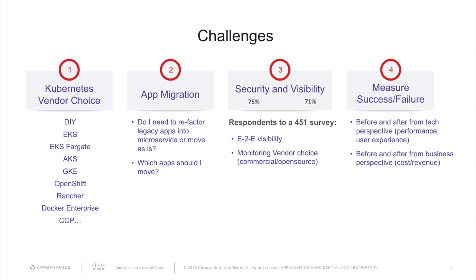Number two is app migration — do you need to refactor legacy apps into microservices or move them as is, and which apps should you move? Number three, end-to-end visibility is a key concern, followed by monitoring vendor choice, including commercial and open source. The fourth key challenge is how to measure success and failures before and after from a technology perspective and from a business perspective.